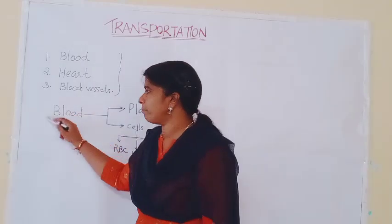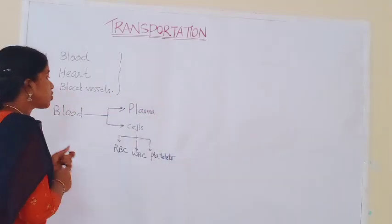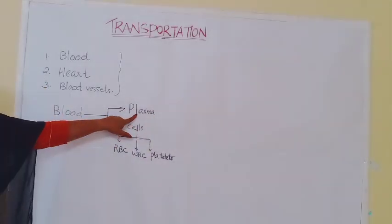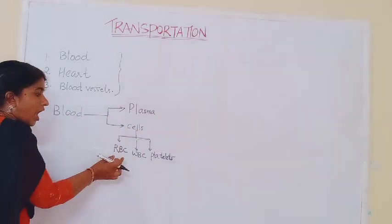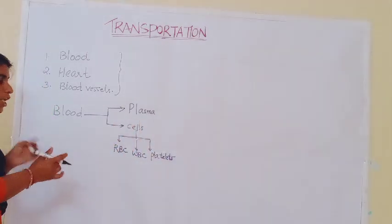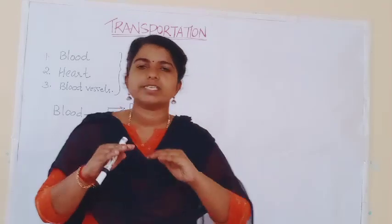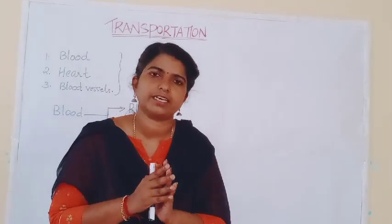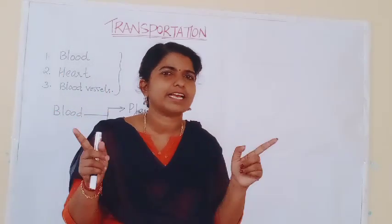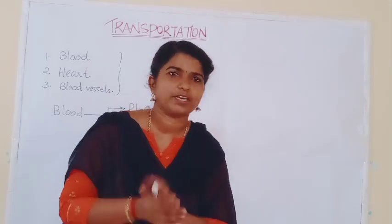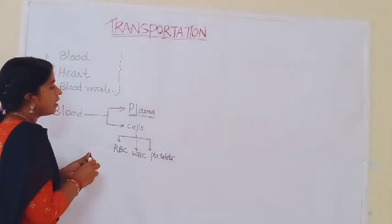First, we go to blood. Blood is a fluid. It has two parts: one fluid part called plasma, and it has certain formed elements — some cells. These include RBC, WBC, and platelets. Actually there is a lot to know about blood, but at your level the basic idea is sufficient. If you want to know more about blood, take biology as your optional subject in class 11. Now, plasma is the fluid part, and the most major component of plasma is water. It helps to transport substances.